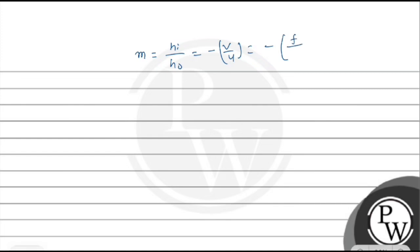So we have magnification that is equal to minus f upon u which is minus f by 2f, right? So I have magnification that is two, so the height of image is two times the height of object.